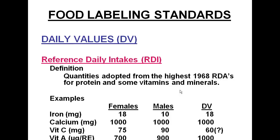The key is that these are adopted from the highest 1968 standards, so they don't really reflect individuality. For example, with iron, the DV is 18 milligrams, which reflects that females need 18 milligrams and males only 10 — they choose the highest. On the food label, you'll see iron, calcium, vitamin C, and vitamin A under the nutrition facts, but no other vitamins or minerals unless the company makes a specific claim or decides to add them on their own.